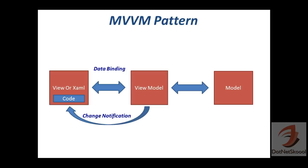All the communication between the View and ViewModel happens with the help of data binding. The change notification that propagates from ViewModel to View, or from Model to View, happens with the help of the INotifyPropertyChanged interface. I have explained the INotifyPropertyChanged interface in my previous lecture, so if you are new to it please go and watch that lecture.